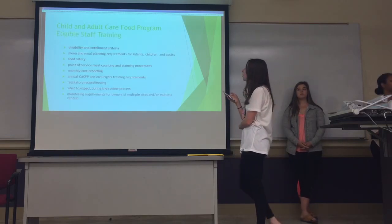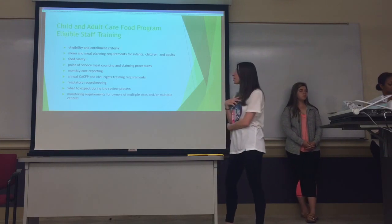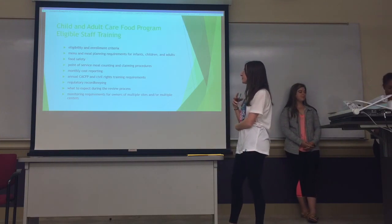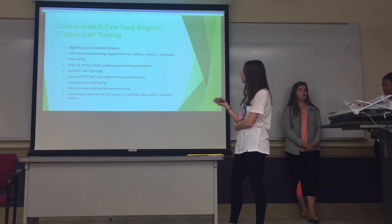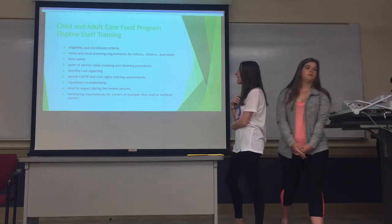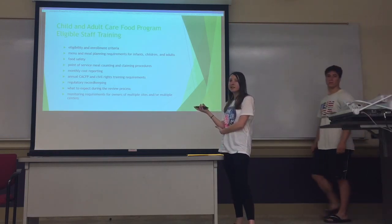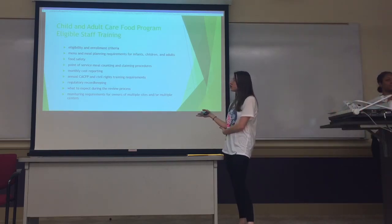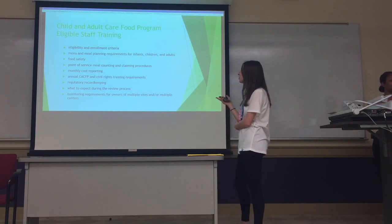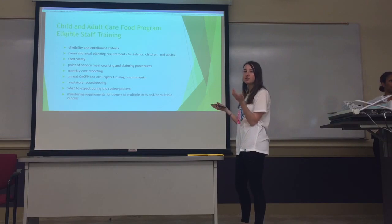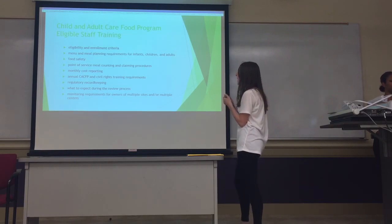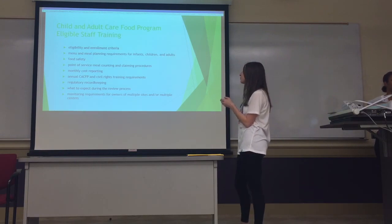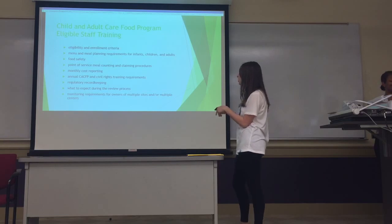As for the staff responsible for the Child and Adult Care Food Program, they have volunteers that help out, and the methods in which they train their staff include eligibility and enrollment criteria, menu and meal plan requirements for infants, children, and adults including nutrient requirements, and food safety — since they're serving an at-risk population.